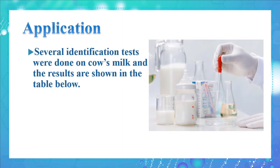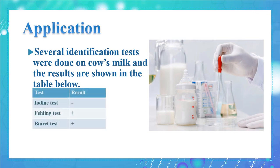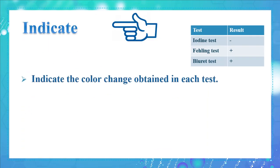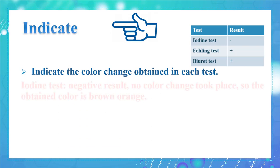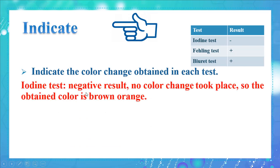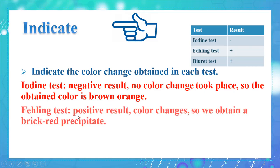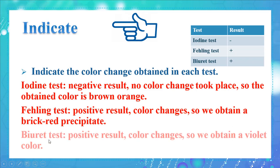Now let's apply what we have learned. Several identification tests were done on cow's milk and the results are shown in the table. First, indicate the color change obtained in each test. With the iodine test, the result was negative, so no color change took place and the obtained color is brown-orange. For the Fehling test, the result was positive — color changes and we obtain a brick-red precipitate. For the biuret test, the result is also positive — the color changes and we obtain a violet color.